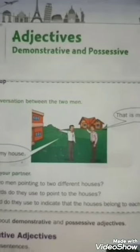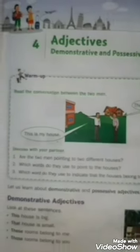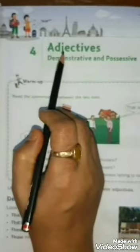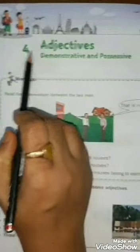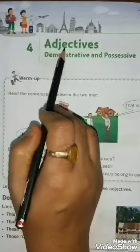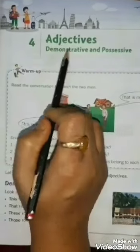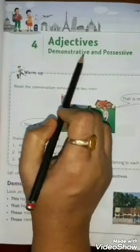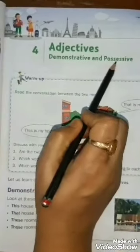Good morning, students. Today I am going to teach you English language, chapter 4, Adjective — Demonstrative and Possessive.